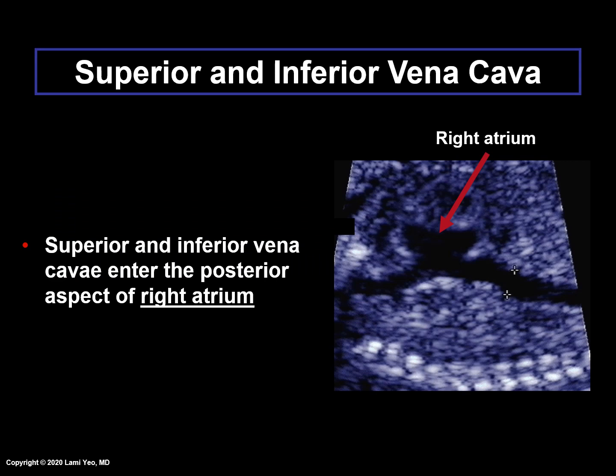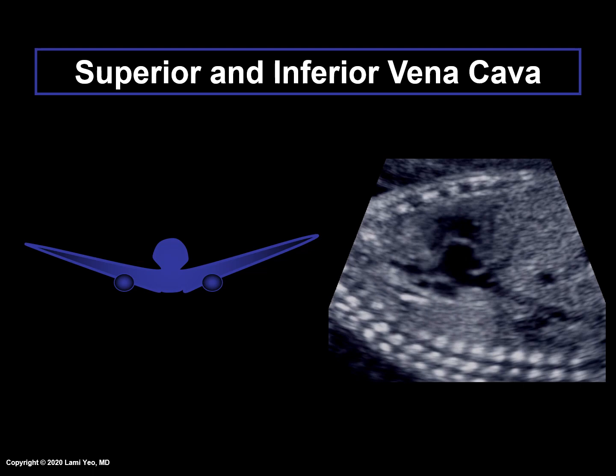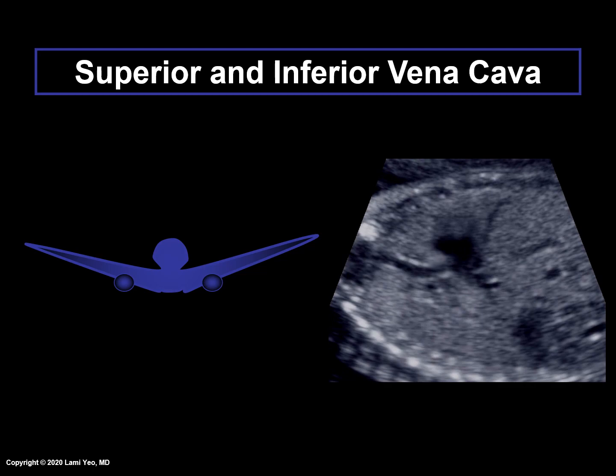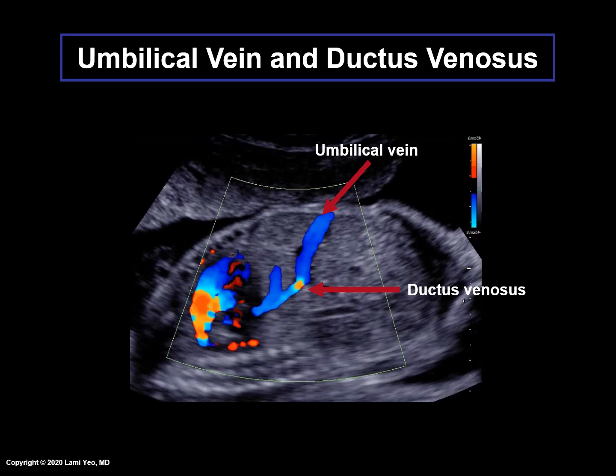Superior and inferior vena cava. In the right sagittal plane, the superior and inferior vena cava should be visualized entering the posterior aspect of the right atrium. Here is a video clip showing both vena cava entering the right atrium. This has the appearance of looking at an airplane which has landed at the airport, in which the wings are the superior and inferior vena cava. The inferior vena cava should not be confused with the umbilical vein and ductus venosus shown using color Doppler imaging in this video clip.